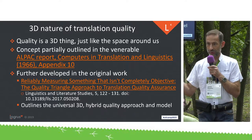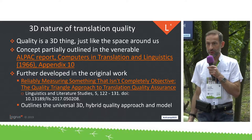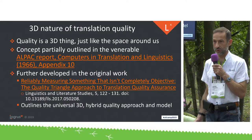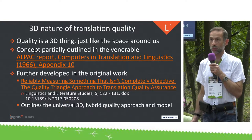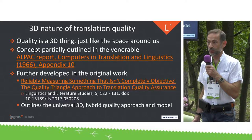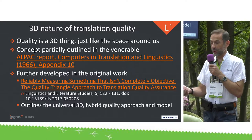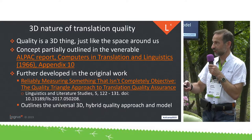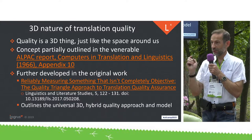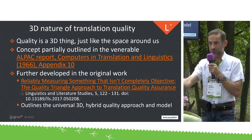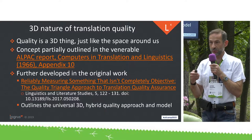The first most important thing here is that quality is not a single figure produced by some quality metric. As soon as it's a single figure, something is wrong or something is missing. Quality is a 3D thing, exactly like the space around us. A unidimensional measurement — just a distance — is absolutely not sufficient in some cases. You need more coordinates.